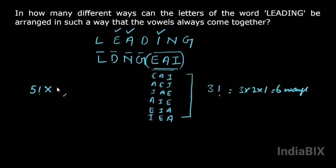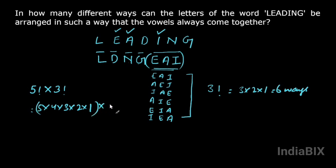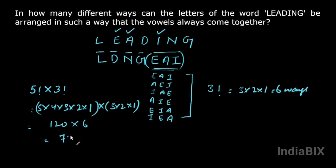The five items can be arranged in five factorial ways, and the three vowels can be arranged among themselves in three factorial ways. Five factorial is five into four into three into two into one, which equals 120. Three factorial is three into two into one, which equals six. So the total number of arrangements is 120 multiplied by six, which equals 720 ways in which the letters of LEADING can be arranged such that all the vowels come together.